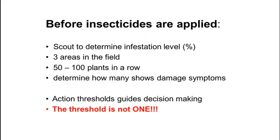Before insecticides are applied, certain things have to be kept in mind. It is very important to scout for damage and determine the percentage infestation on a field. That is usually done by looking at three different areas in a particular field, counting 100 plants in a row and checking how many of them have got damage. This will provide you with an objective indication of how serious the infestation is, and you can use an action threshold which we will talk about later.